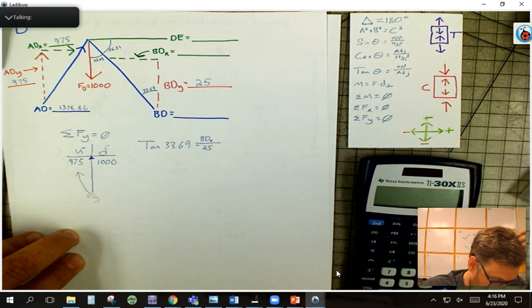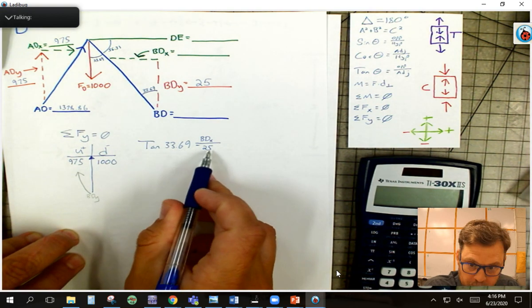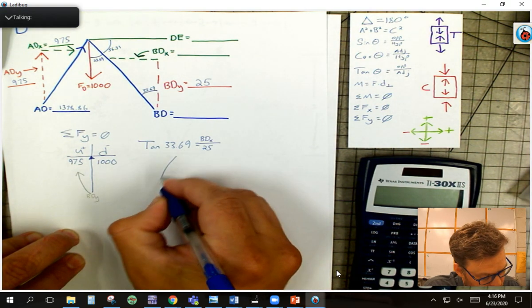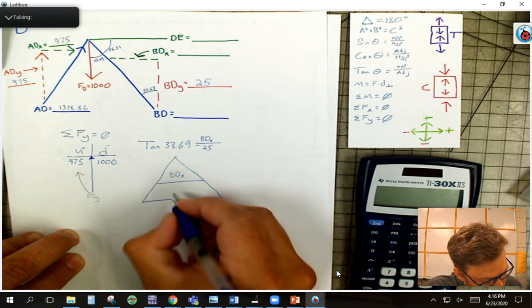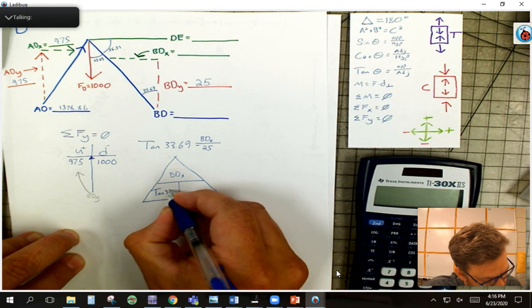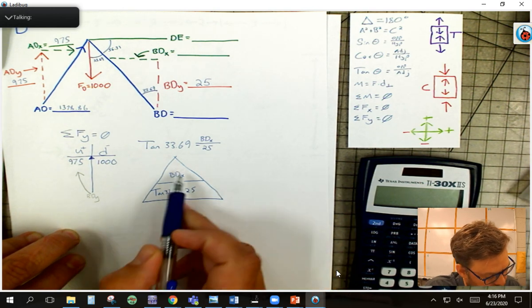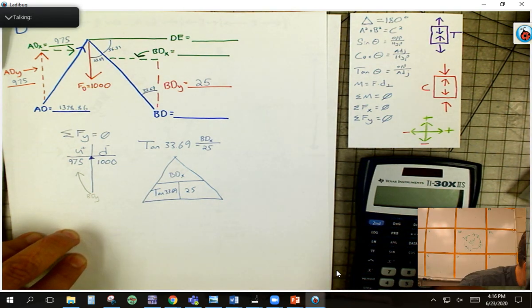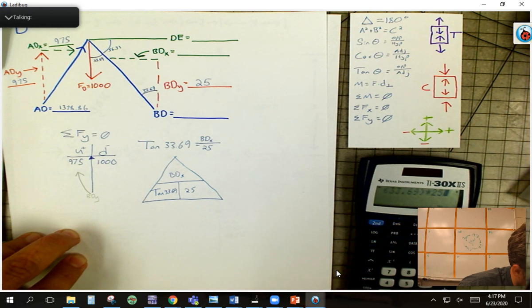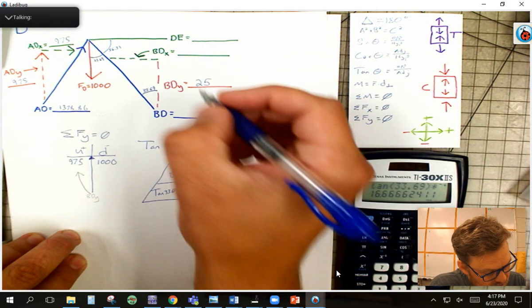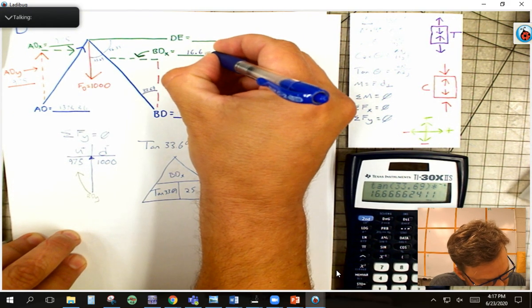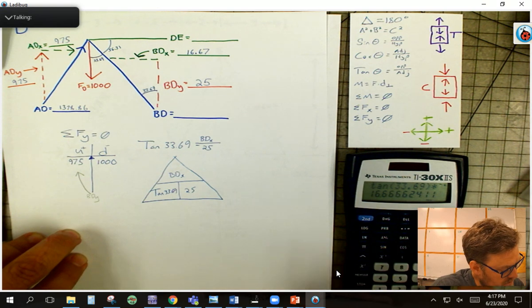Okay, so if I put that in my calculator, I'm going to multiply this number by the 25. Once again, I like to cheat and use my triangle. So I've got BD in the X up top, tangent of 33.69 there, and the 25 there. Well, to get that, I need to multiply these two numbers together. So I'm going to do that, and I'm going to say tangent of 33.69 multiplied by 25 gets me 16.67, let's call it. So I'm going to go 16.67.